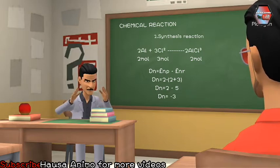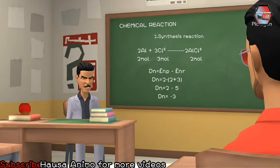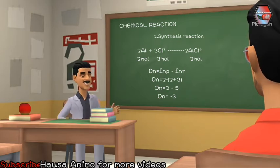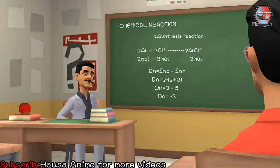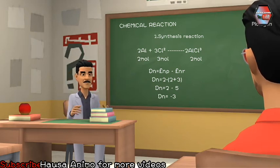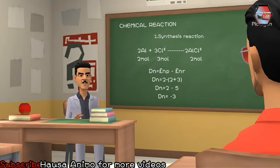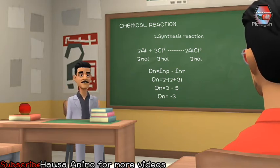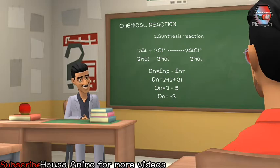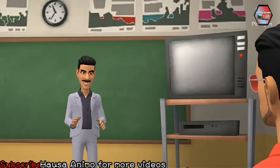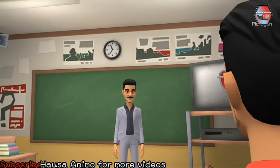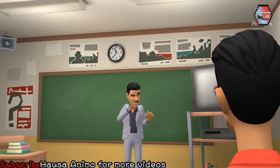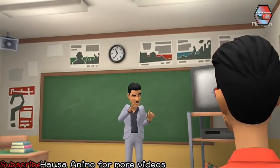We have 2 more, 1 more, and 2 more. Dn equals the summation number of reactants minus the summation number of products. Let's say 2 plus 1 minus 2, equal to 3 minus 2, which equals 1. My Dn is 1. Do you understand? Yes, sir. This is case 1. We are going to start case 2 tomorrow.